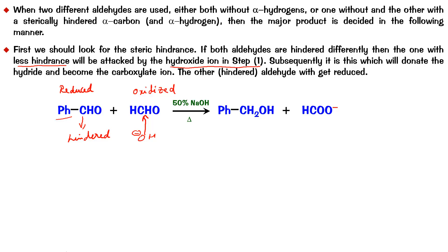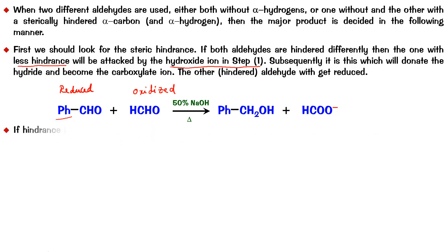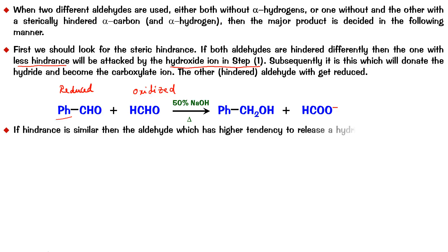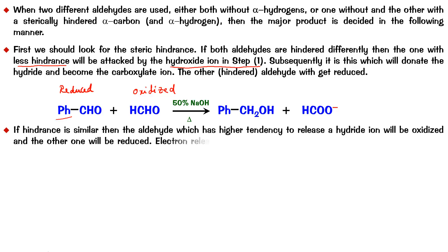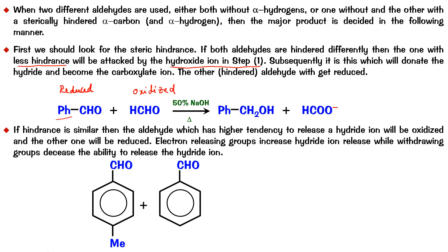What happens if the hindrance is similar? If the hindrance is similar, then the aldehyde which has a higher tendency to release a hydride ion will be oxidized and the other will be reduced. Electron-releasing groups increase hydride ion release while electron-withdrawing groups decrease the ability to release the hydride ion. Consider two molecules where both have similar hindrance — both are attached to a phenyl group, so equal amount of hindrance. When the hindrance is similar, look for the aldehyde which has a higher tendency to release the hydride.